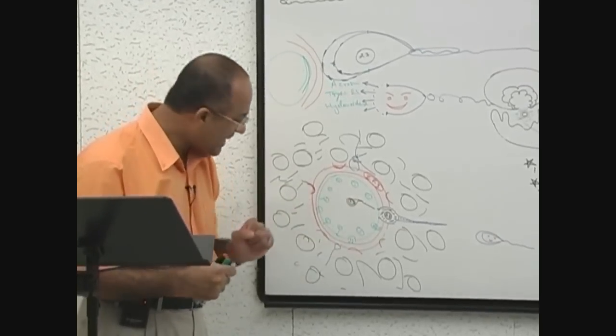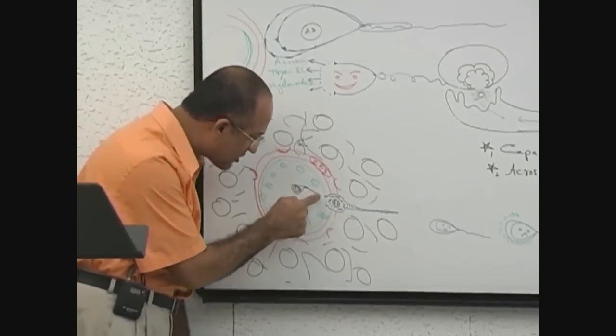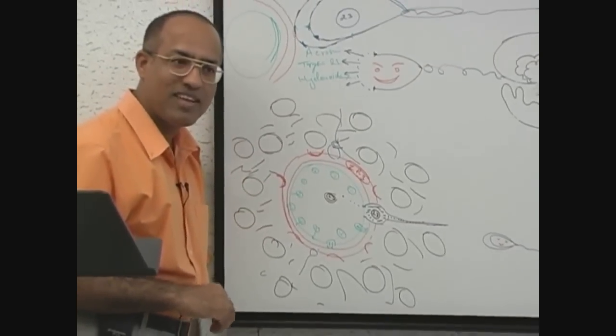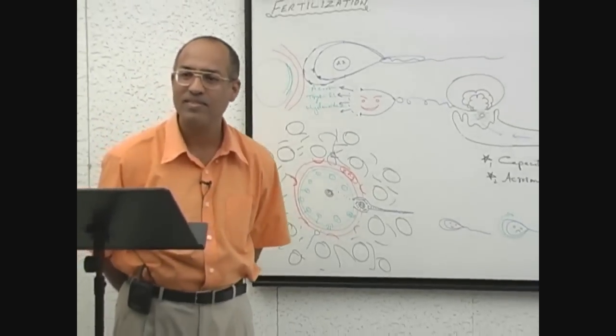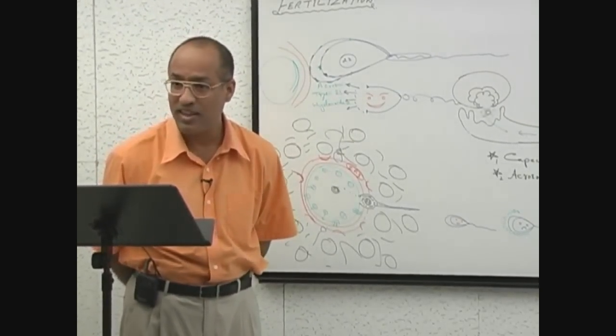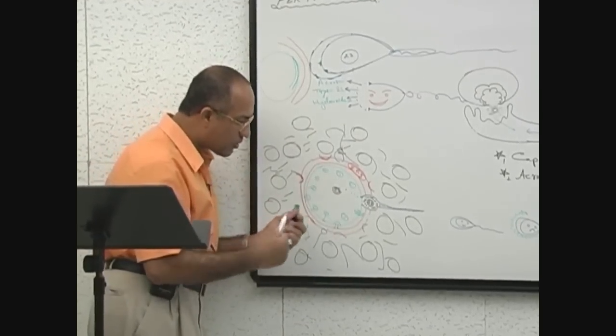Somehow ovum does not like the tail, so first of all its tail undergoes degeneration. What really ovum needed from the sperm was genetic material, because ovum was having just 23 chromosomes.